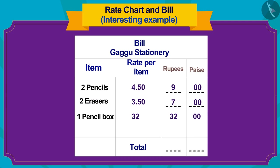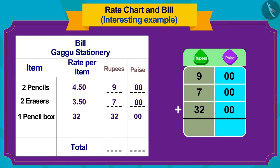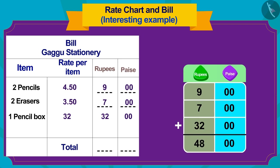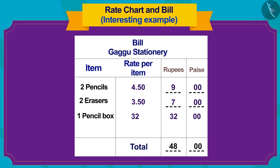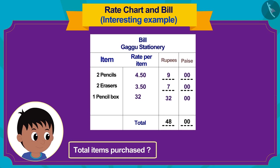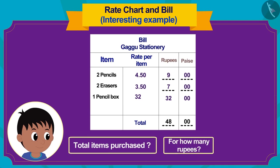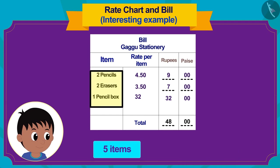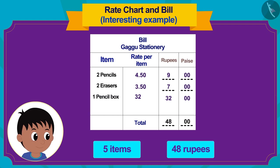Children, now how will we find out the total cost of goods? If we add 9, 7, and 32 rupees, then the total items will be priced at exactly 48 rupees. Let us write it this way in the bill. In this way, Raju bought a total of 5 items for 48 rupees.